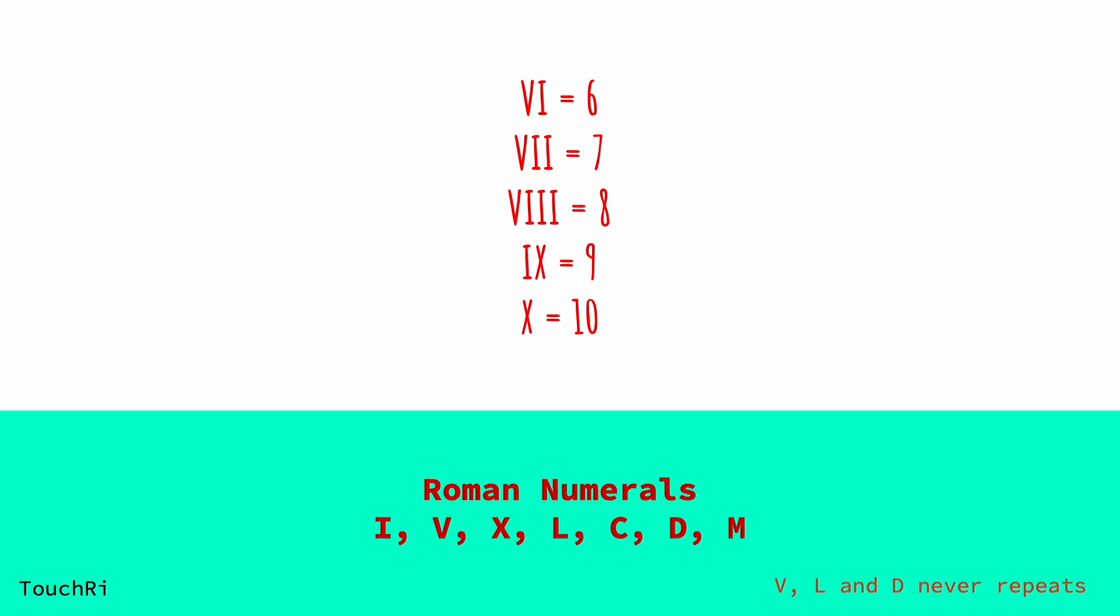Let's dive into the rules of forming Roman numerals. Remember, the symbols are additive, which means when a smaller value follows a larger value, you add them together. For example, VI is 6 because V (5) plus I (1) equals 6.